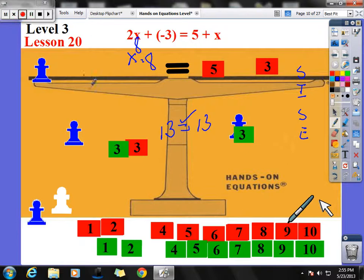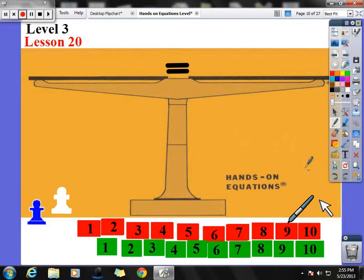So for lesson 20, the only thing that is new today is now we see stars on both sides, or x's on both sides, and we see numbers on both sides. Sometimes positive, sometimes negative. Let's try another example. Please clear your boards.